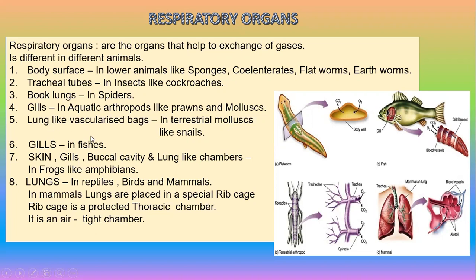Gills and lung-like structures are found in arthropods and molluscs. Gills are present in fish. For amphibians, we have three types of respiratory organs. Then there are lungs in reptiles and birds, and the lungs are enclosed in a special rib cage.